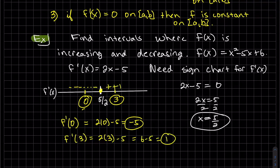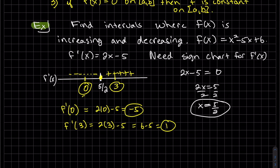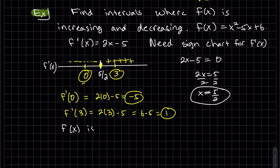We're doing a sign chart on the derivative, so we plug test points into the derivative — that's why you should always label it. We find the zero of the derivative is at x = 5/2. Since the test gives negative 5, it's negative on the interval negative infinity to 5/2. Since we get positive one, it's positive to the right. This is a linear derivative, so it crosses once and alternates sign.